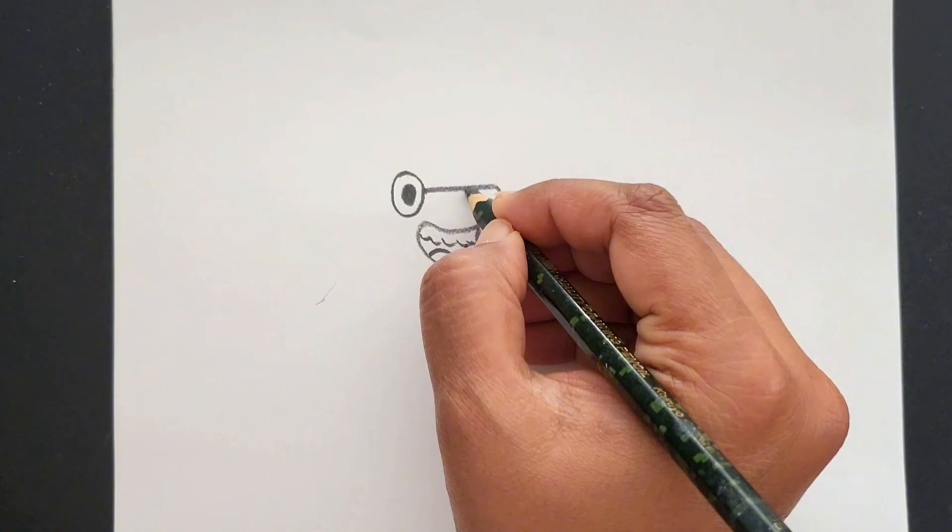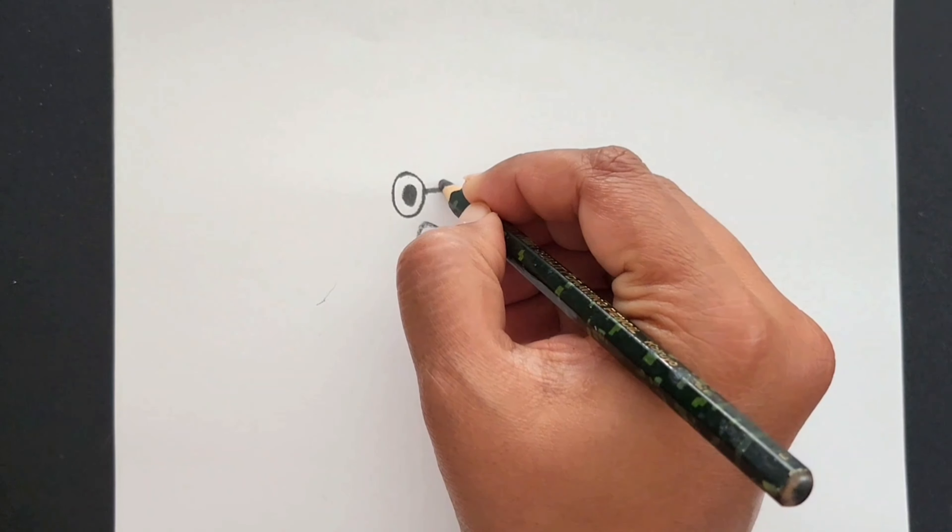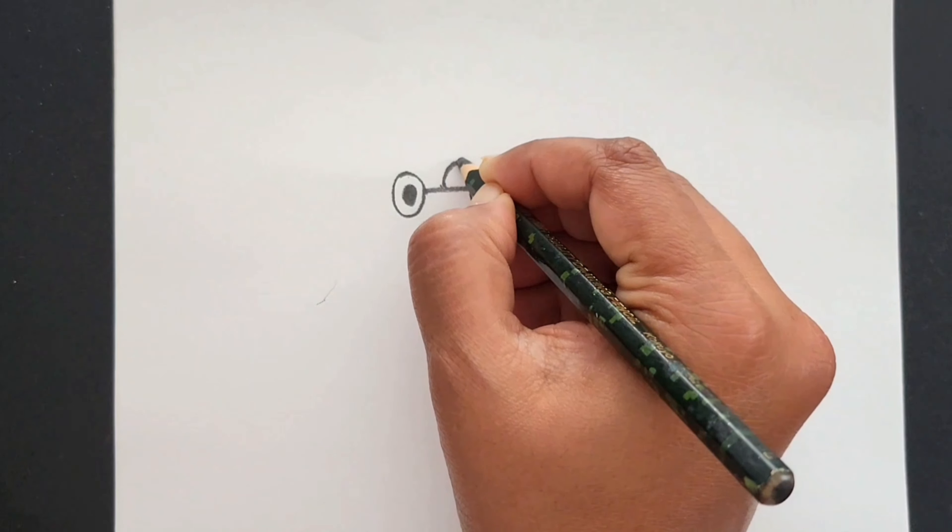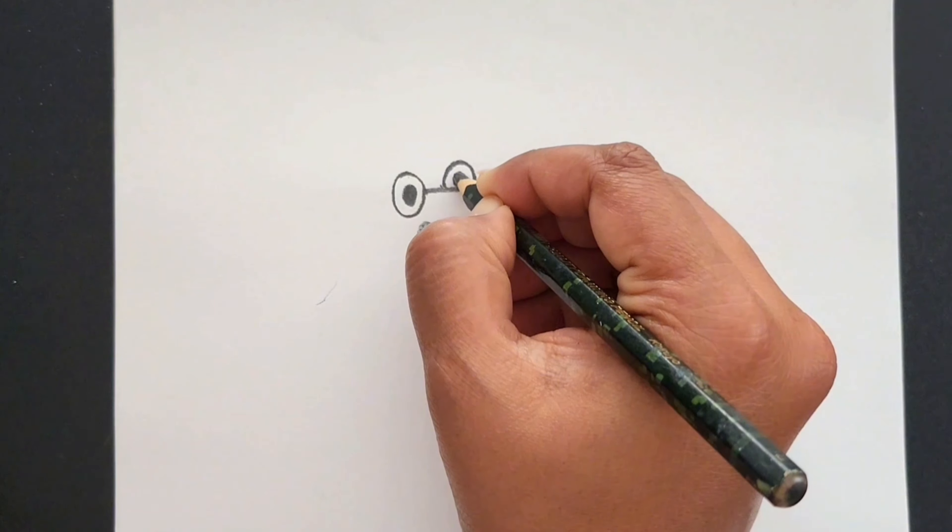For the nose, draw a small curve. Leaving little space, draw an upside down U and draw the pupil.